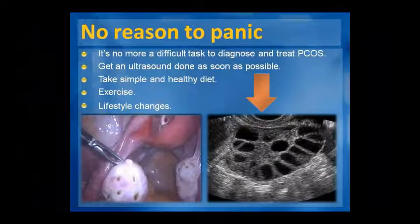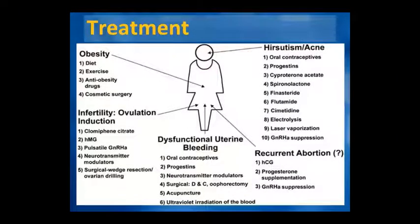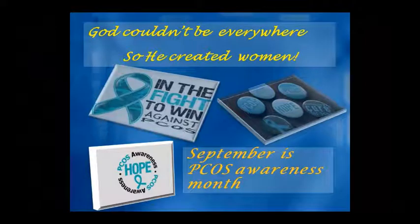Do not panic — PCOS can be diagnosed and treated. Diagnosis is not difficult with ultrasound. With a simple and healthy diet and lifestyle changes, we can overcome this problem. Treatment targets obesity, ovulation induction, and dysfunctional uterine bleeding through diet, exercise, anti-obesity drugs, and other approaches. Your life is important, so please address your lifestyle and seek treatment.